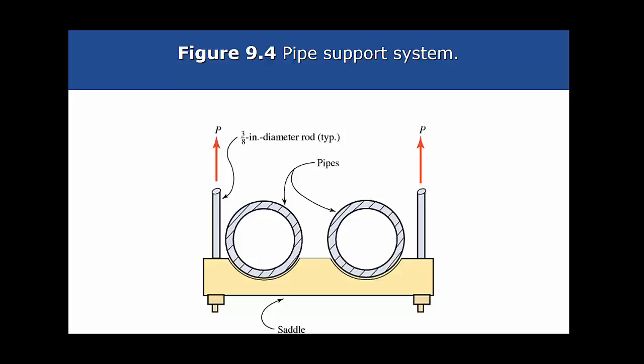Each rod is 3/8 of an inch in diameter and has an allowable axial tensile stress of 24,000 psi in the body of the rod. Calculate the allowable axial tensile load in each rod.